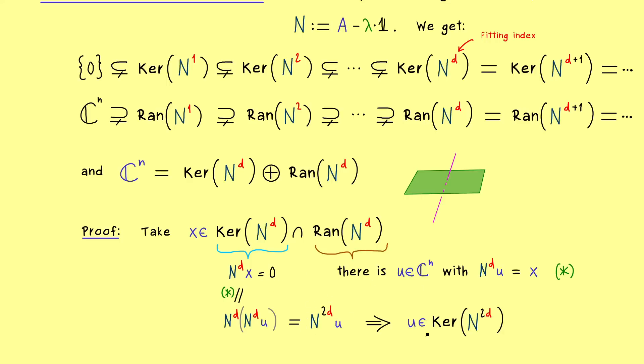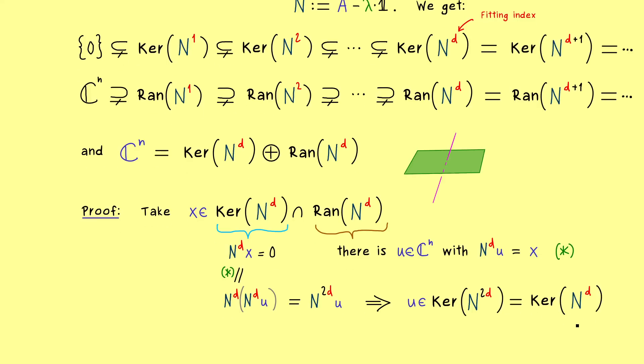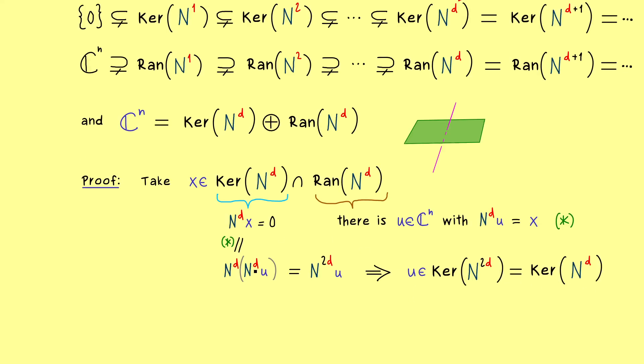This is a nice result, because we know this index is higher than our fitting index, which means we can use that we have equalities on the right here. Hence nothing will change here, and it's actually the same kernel as the one of n to the power d. This means, if we apply n to the power d to u, we get out the zero vector. And now at this point, we can use the definition of our u, which tells us, that n to the power d u is equal to x as well. So the conclusion is, that x was zero all along. And this is what we wanted to show. It means that the intersection here is trivial.